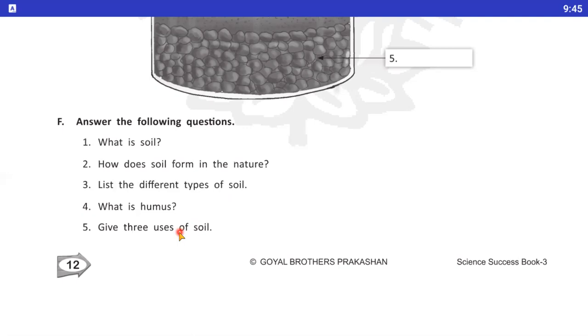Three uses of soil are, it provides water and nutrients to plant. Sab se pehla use hai, yeh plants ko water and nutrients provide kerti hai. It is home to many animals. Yeh bohat se animals ka ghar hooti hai. It is used to make bricks, pots, diyas and kachahous. Now our chapter number 4 is completed. Complete your work and revise the chapter. Okay? Thank you.